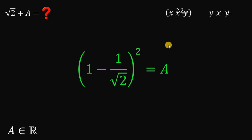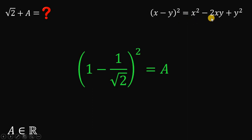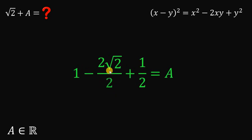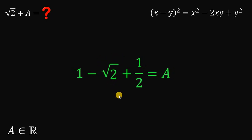To simplify, we use the identity: x minus y, quantity squared, equals x squared minus 2xy plus y squared. Here x equals 1 and y equals 1 over square root of 2. Applying this identity gives us 1 minus 2 over square root of 2 plus 1 half. Rationalizing 2 over square root of 2 gives 2 times square root of 2 over 2, which simplifies to just square root of 2.